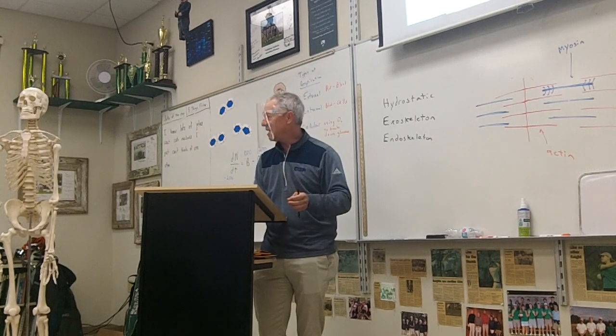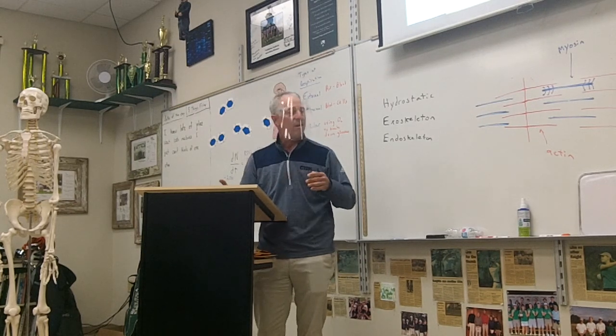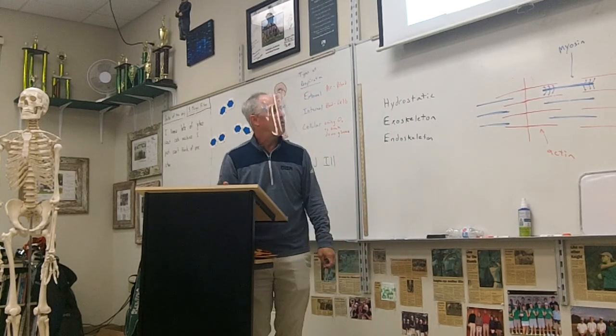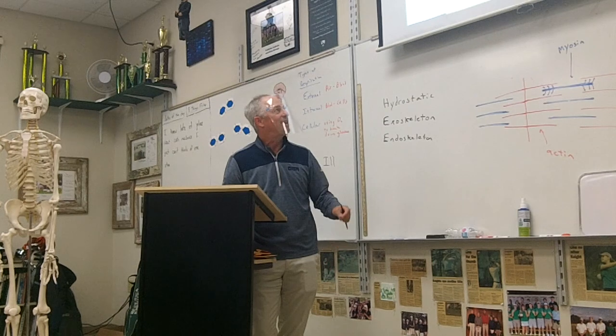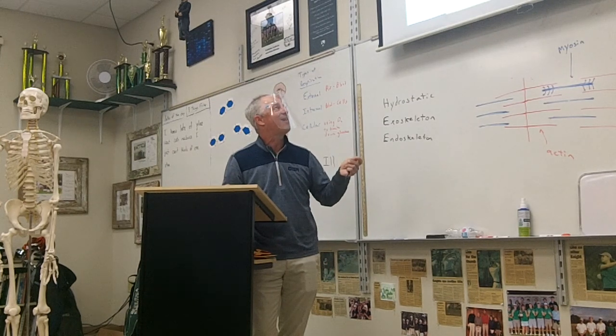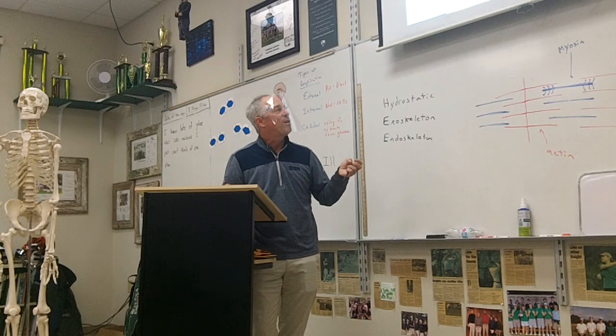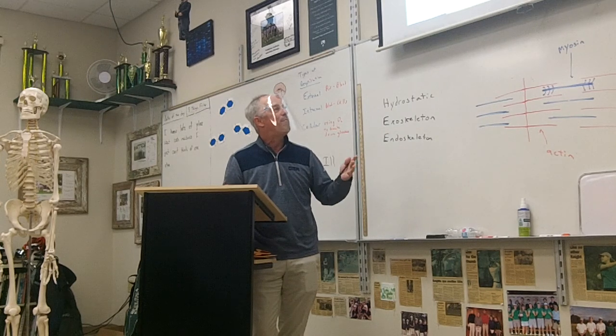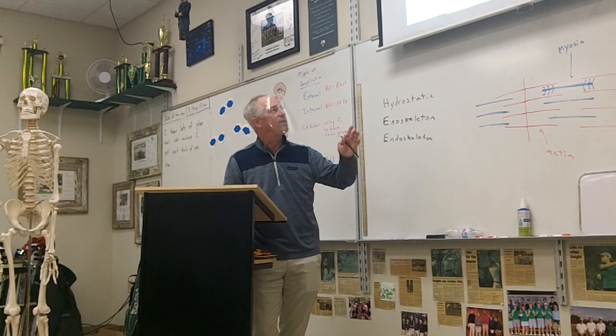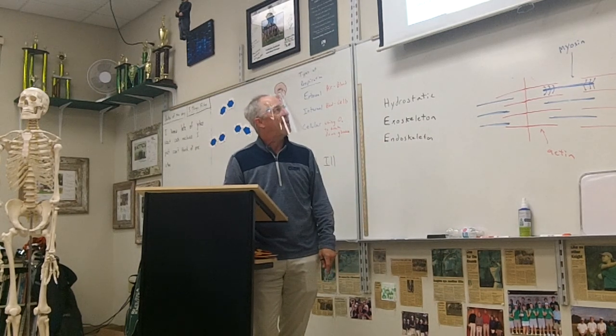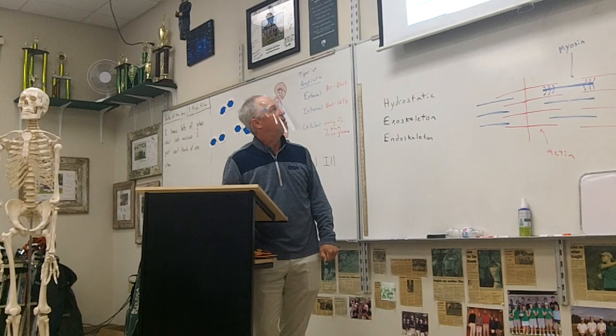So the living things are the plants, animals, protists and bacteria. And the non-living things are like the air, water, and soil, things that are abiotic. So you've got your biotic factors, your living things, and your abiotic factors, your non-living things. And how they interact is important with one another.